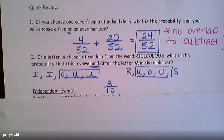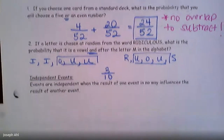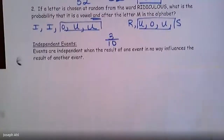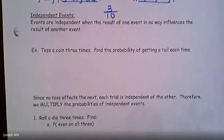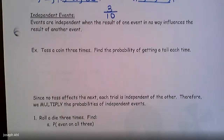So just a quick reminder as to what 'or' versus 'and' looks like. We're going to jump right into today's lesson, which covers independent events. Events are independent when the result of one event in no way influences the result of another. The best example is tossing a coin — whether you get heads or tails the first time will not affect what happens when you toss it a second or third time. That third time, the chances of getting heads or tails are still the same as they were for the first two tosses.